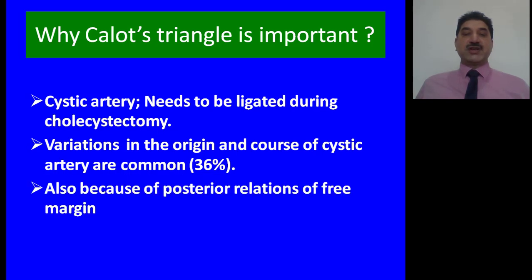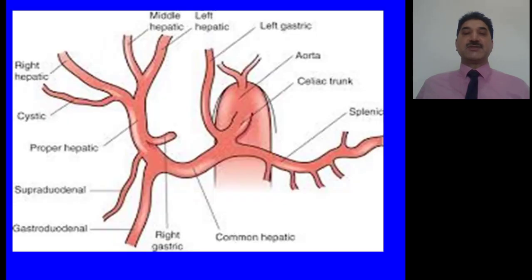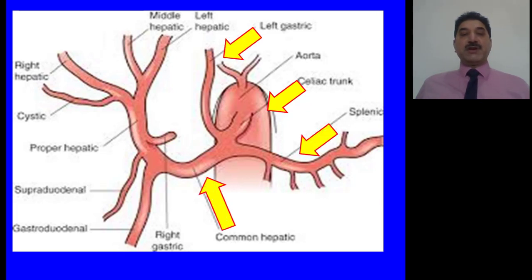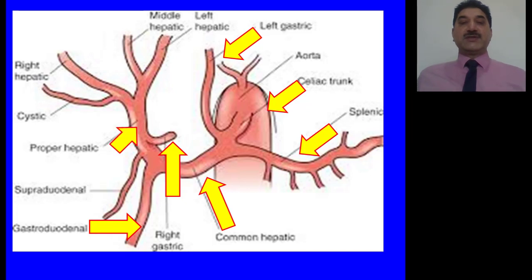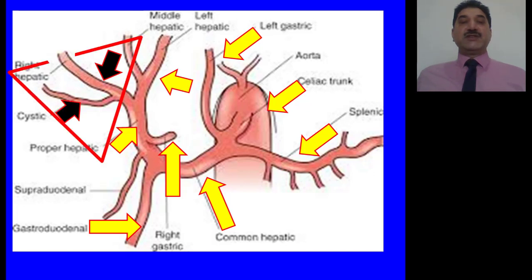Calot's triangle is also important because of the posterior relations of the free margin of the lesser omentum. Let us trace the origin of the cystic artery and revise the branches of the celiac trunk. The celiac trunk arises from the abdominal aorta and gives the left gastric, splenic, and common hepatic artery. From the common hepatic artery arise the right gastric, right gastroepiploic, and supraduodenal branches; thereafter this vessel is called the hepatic artery proper. The hepatic artery proper divides into right and left hepatic branches, and from the right hepatic artery arises the cystic artery, which usually supplies the gallbladder. But this artery is known for variations in its origin and course.